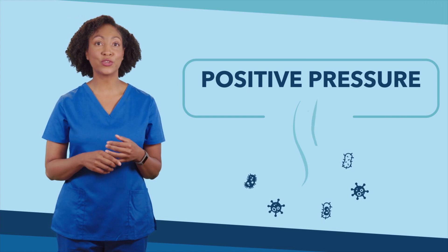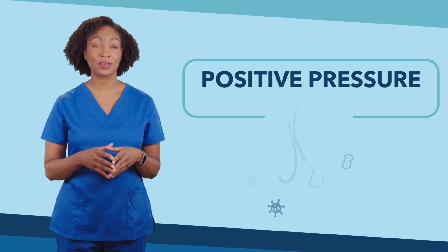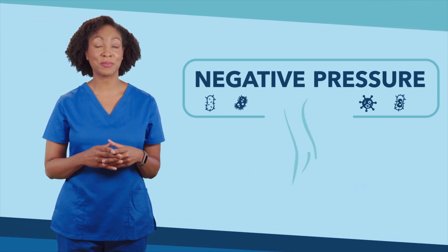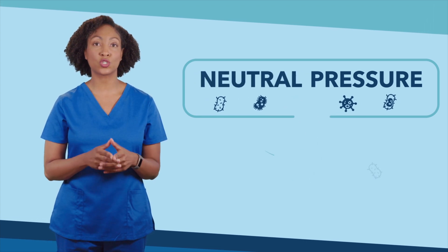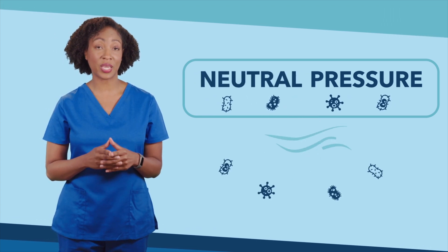Positive pressure, used to keep contaminants out. Negative pressure, used to keep contaminants in. And neutral pressure, where the pressure of the space doesn't matter.